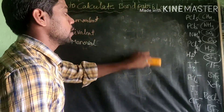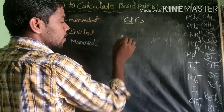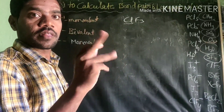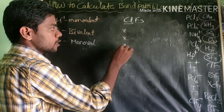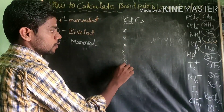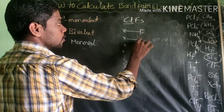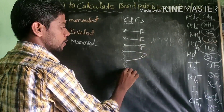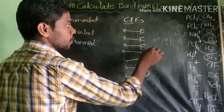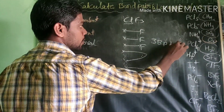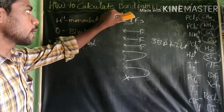Next, ClF3 — chlorine trifluoride. Chlorine is a halogen, a 17th group element with 7 valence electrons. There are 3 fluorine atoms forming 3 bonds, using 3 electrons, leaving 4 electrons — forming 2 lone pairs. Therefore, ClF3 has 3 bond pairs and 2 lone pairs of electrons.